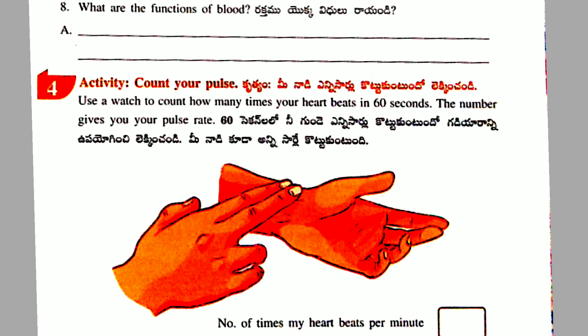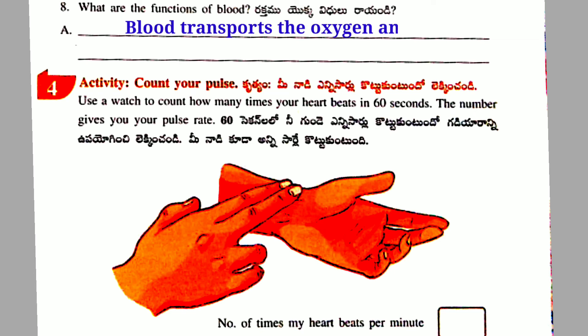Eighth question: What are the functions of blood? Answer: Blood transports oxygen and nutrients to all parts of the body.